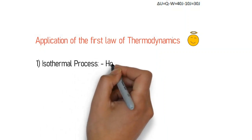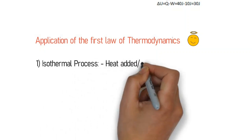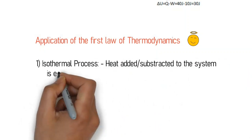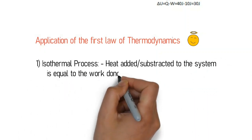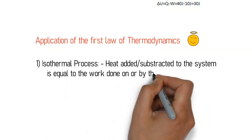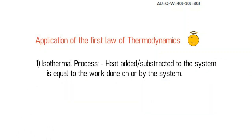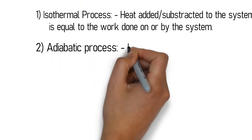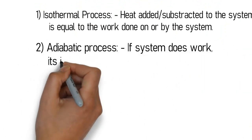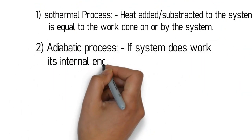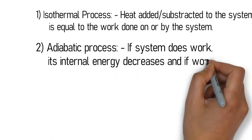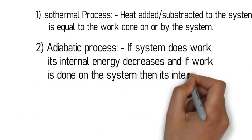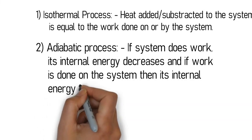Application one: isothermal process. We apply the first law to different processes. In an isothermal process, temperature remains constant, so internal energy does not change. Hence, the first law gives Q = W — heat equals work done, depending on the sign convention.